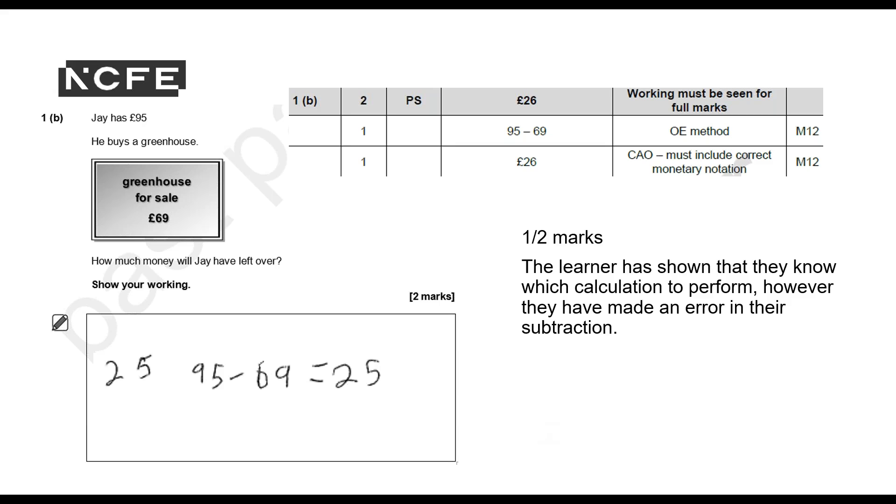And I'll show you that now. So they'll get one out of two marks. The learner has shown that they know which calculation to perform—they've got the 95 take away 69—but they've made an error in their subtraction to reach an answer of 25 instead of 26 pounds. But they will get this one mark here for doing the method.